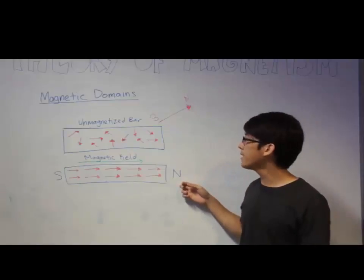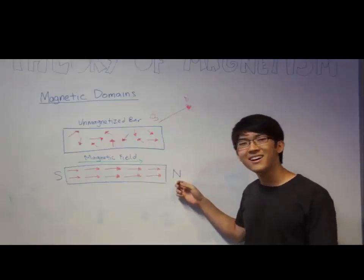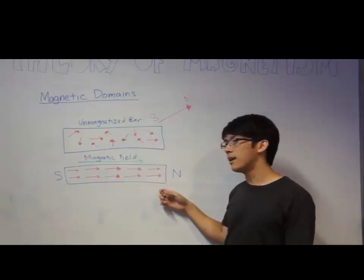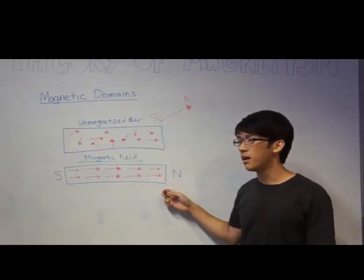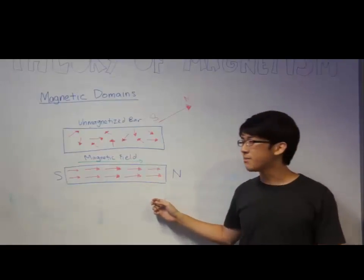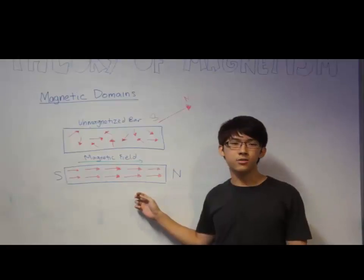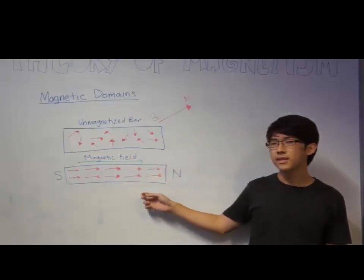This diagram shows a magnetized bar where all the domains are aligned in the same direction. When all the domains are aligned in the same direction, it becomes at its strongest, which is also called magnetic saturation.